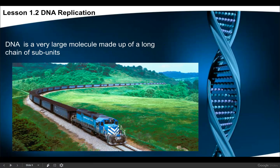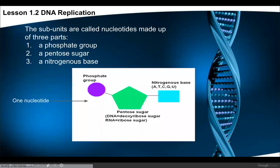DNA is a large molecule made up of a long chain of subunits — like a train made up of individual cars. It has three different parts collectively called a nucleotide: the first part is a phosphate group, the second part is the sugar — deoxyribose in DNA and ribose in RNA — and then it has a nitrogenous base. There are five nitrogenous bases; four are found in DNA, and uracil is found only in RNA.